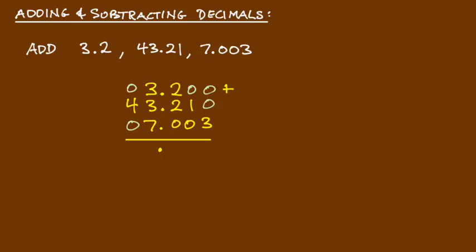Now I can go through and add them just like normal. Remembering that my answer will have a decimal point exactly in line with the other ones. Let's start from this end and go 0 plus 0 plus 3 gives me 3. 0 plus 1 plus 0 gives me 1. 2, 2, 2 and 0 added together gives me 4. 3 plus 3 is 6 plus 7 is 13, so I'm going to put the 3 here, carry the 1. And I've got 1 plus 4 gives me 5. So my answer is 53.413.